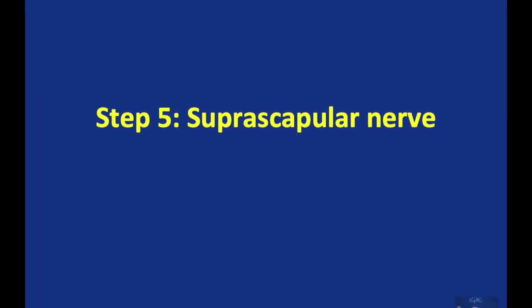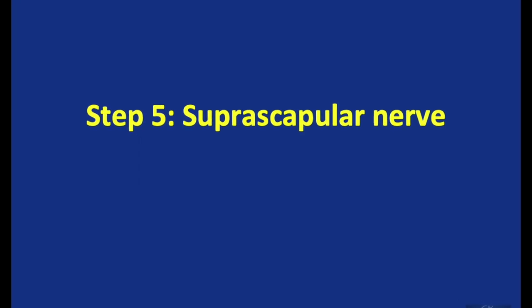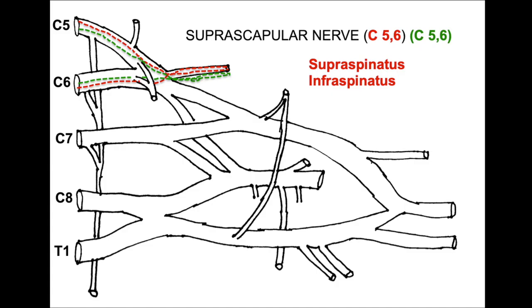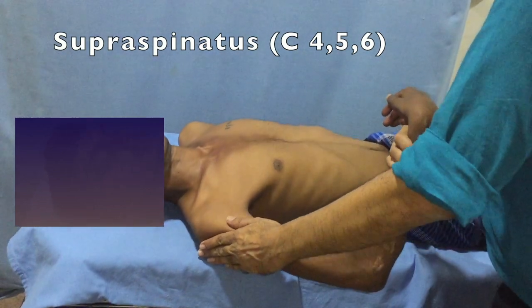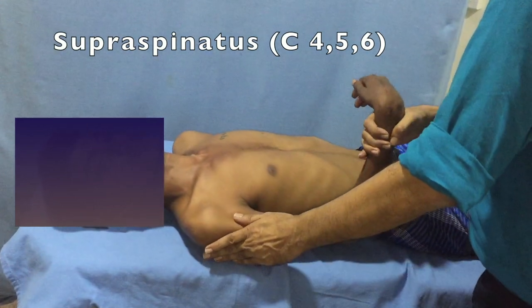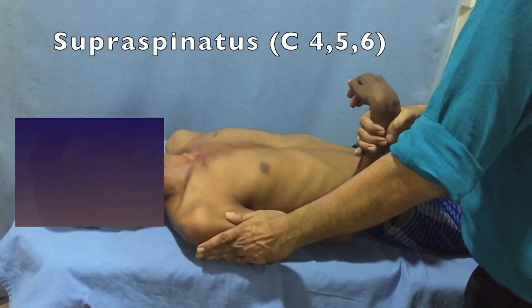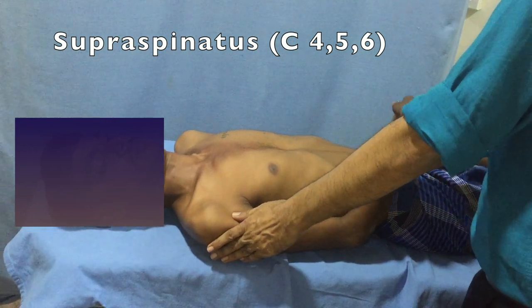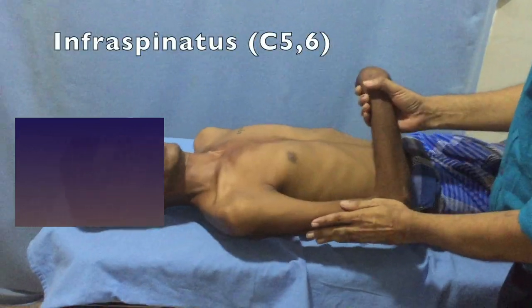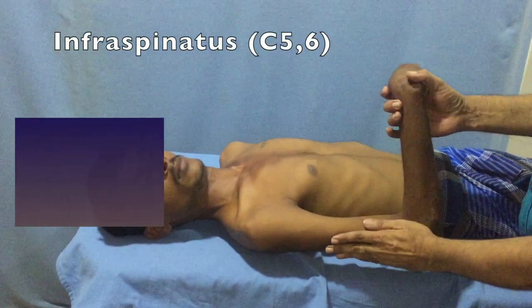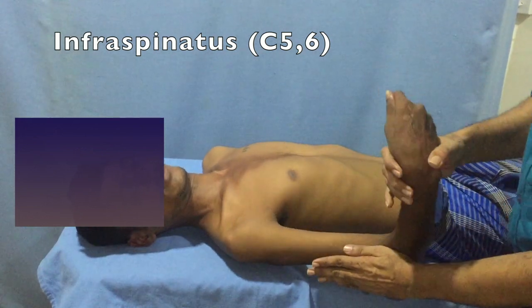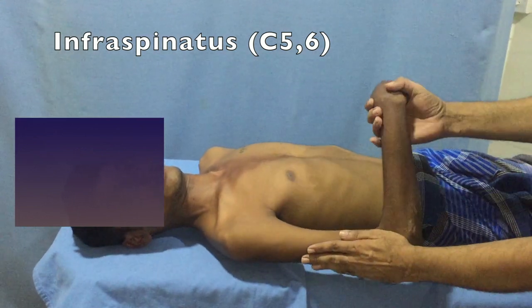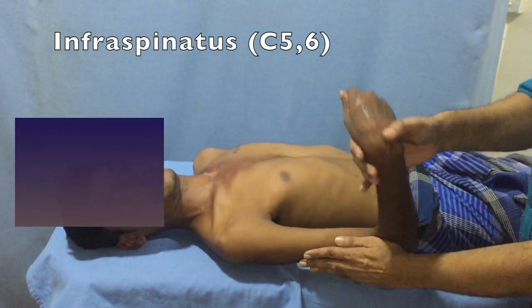Examining the suprascapular nerve involves testing two muscles: the supraspinatus and the infraspinatus. If the patient is not able to abduct the shoulder in the standard test, gravity should be eliminated and the supraspinatus checked. The infraspinatus is tested with the patient in supine position, asking the patient to externally rotate the shoulder.